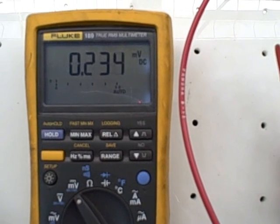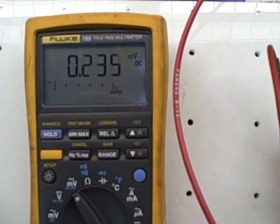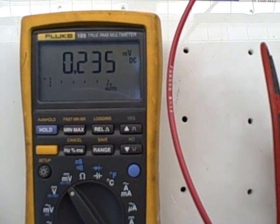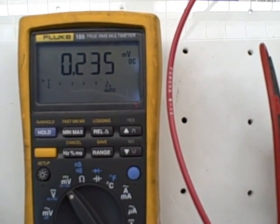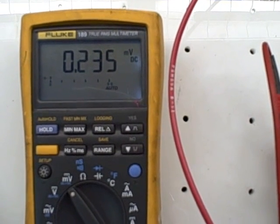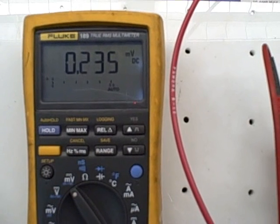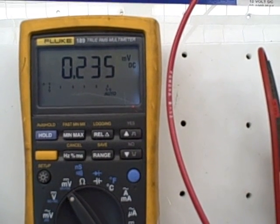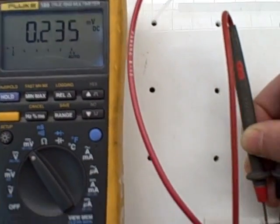we have 235 microvolts. This is on the 5 millivolt scale and everything is to the right of the decimal point. So we have 235 microvolts as a voltage drop across the fuse. Very accurately measured.